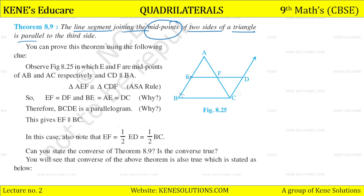In triangle AEF, let's see how we can prove it congruent with triangle CDF by the ASA rule. E and F are the midpoints of AB and AC. We have an opposite angle at the vertex, and AB and DC are two parallel lines giving us an alternate angle pair.